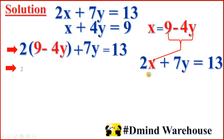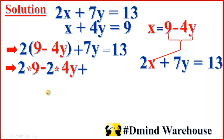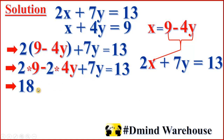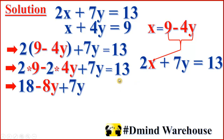Expanding the bracket: 2 times 9 minus 2 times 4y plus 7y, which is equal to 13. This means 2 times 9 is 18, minus 2 times 4y which is 8y, plus 7y, equal to 13.